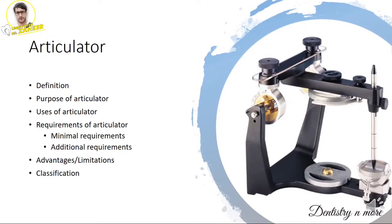Moving on to articulators — this is one of the most common long essay questions. If you have to frame an answer for articulator, you will write its definition, purpose, where it is used, minimum and additional requirements, advantages and disadvantages, and the broad classification based on theories of occlusion, ability to simulate the TMJ, and based on its adjustability.